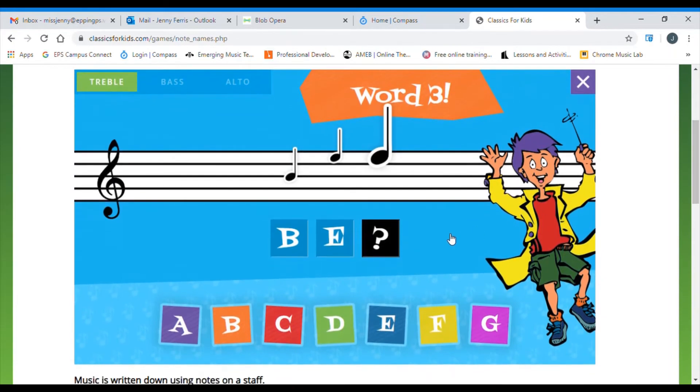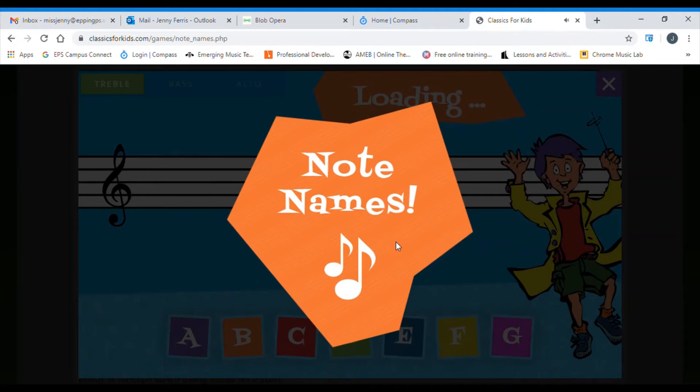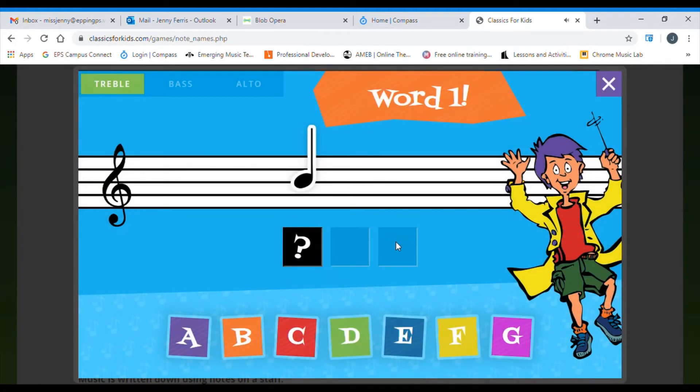Once you have them memorised, you are ready to play the game. As you can see, it is going to spell out a word that is three letters long. To work out what our first letter is, we need to work out whether that note is in a line or a space. Notice the way that this line is travelling right through the middle of the note head. There's a line going right through the middle of it, which means we're going to be using Every Good Boy Deserves Fruit to work it out.